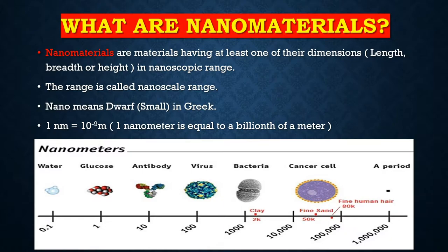A virus is 100 nanometers. Can we see a water molecule with our naked eye? No. Glucose? No. Antibody? No. Virus? No. These things are so small, with dimensions in the nanoscopic range, that we cannot see them. Nanomaterials are the smallest things — they are very small.